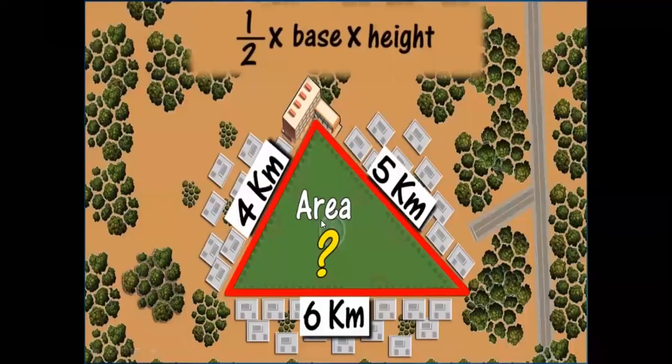Let me ask a question. Say you have been asked to find the area of this triangular plot as shown in the figure. Here, the measures of the three sides are given as 4 km, 5 km, and 6 km respectively. The question is, will you be able to find the area of this triangular region just with the help of the formula, half into base into height?